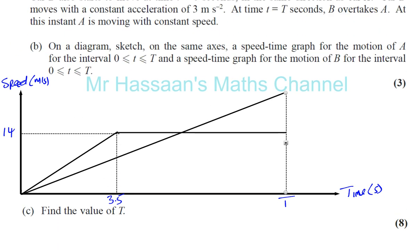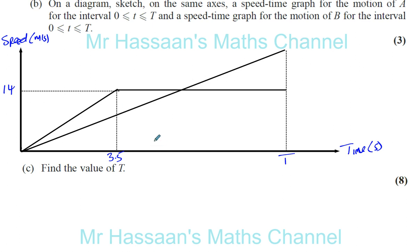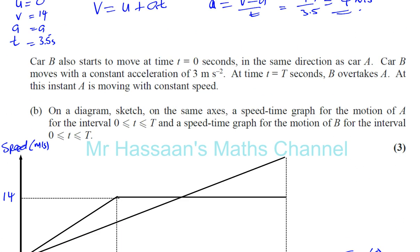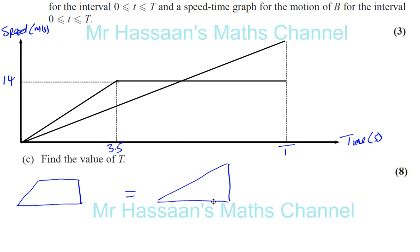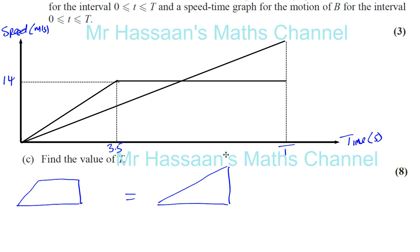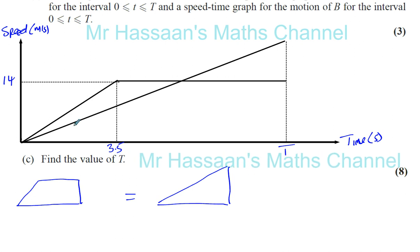Part C says find the value of T — that's 8 marks. To find the value of T, these two areas are the same. The area of the trapezium equals the area of the triangle. For the trapezium, this length is basically T, and this length is T minus 3.5, and the height is 14. For the triangle, the base is again T. What's the height going to be? It's moving with constant acceleration of 3 meters per second squared for T seconds.